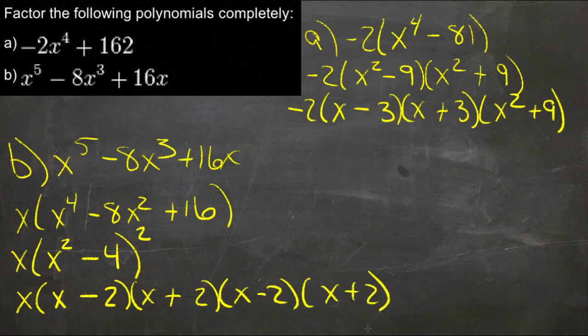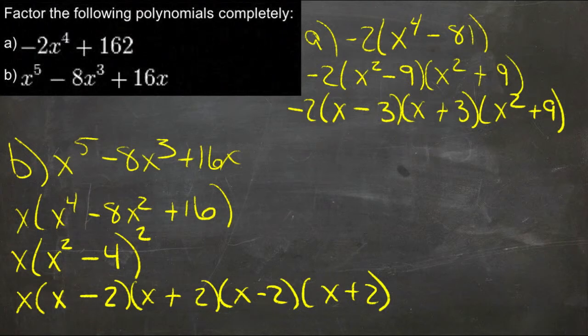x plus 2, so that really factors way down, because we end up with sort of the double difference of squares.